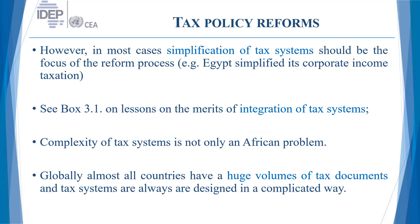Continuing to discuss tax policy reforms: in most cases, simplification of tax systems will do the job. For instance, Egypt has done that, but is not yet achieving what is desired, because tax collection is a complicated affair — not only in developing and emerging economies, but also in advanced countries. Sometimes simplification depends on integrating existing tax systems, combining one or two taxes into a single one. Generally, if you check any archive of a fiscal authority, you will find tax documents are the most complex, the most bulky, running into huge volumes of pages. This simplification is long overdue.